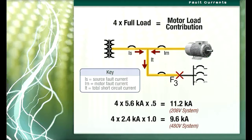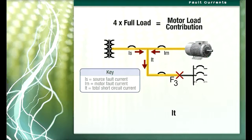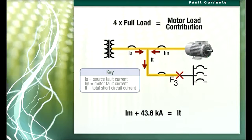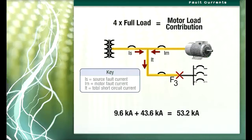Where the actual motor load is known, it can be used in this calculation. Therefore, the total short circuit current at F3 is the sum of the source fault current calculated earlier to be 43.6 kA, plus the motor fault current contribution of 9.6 kA, which yields a total short circuit current of 53.2 kA in a 480 volt system.